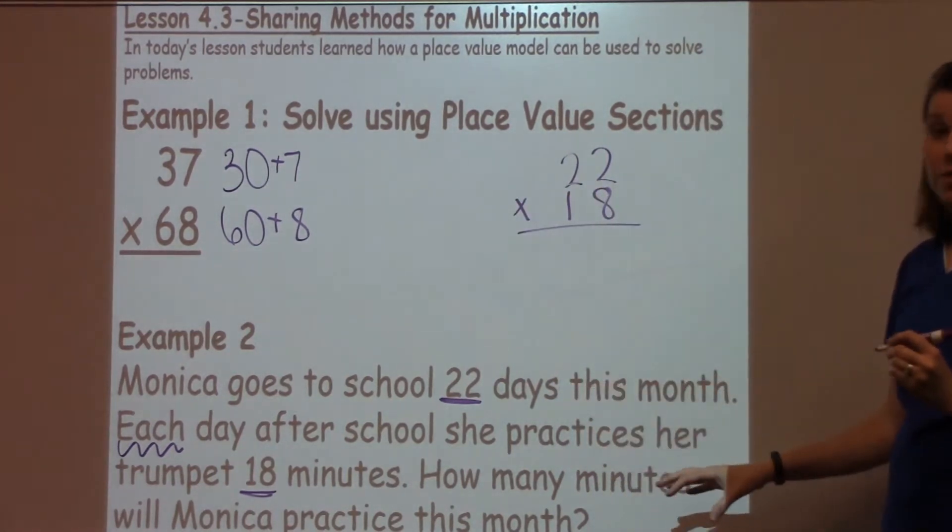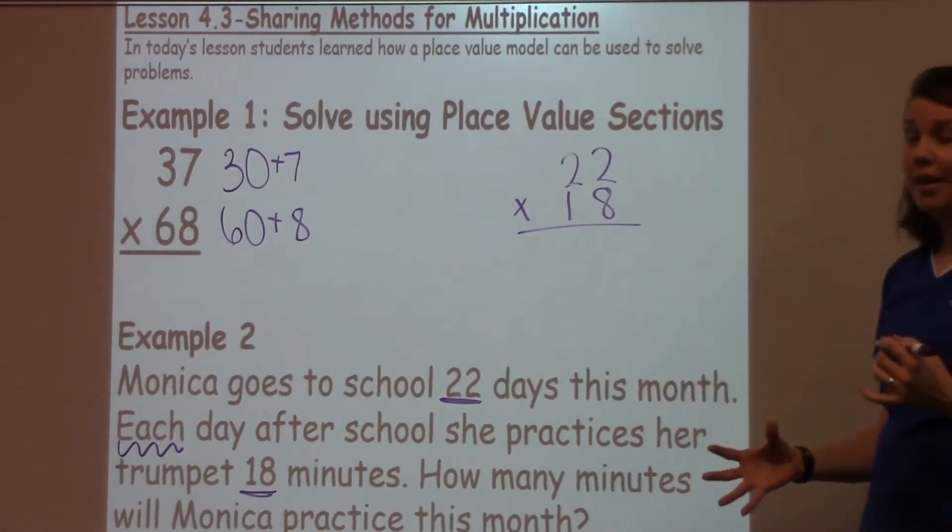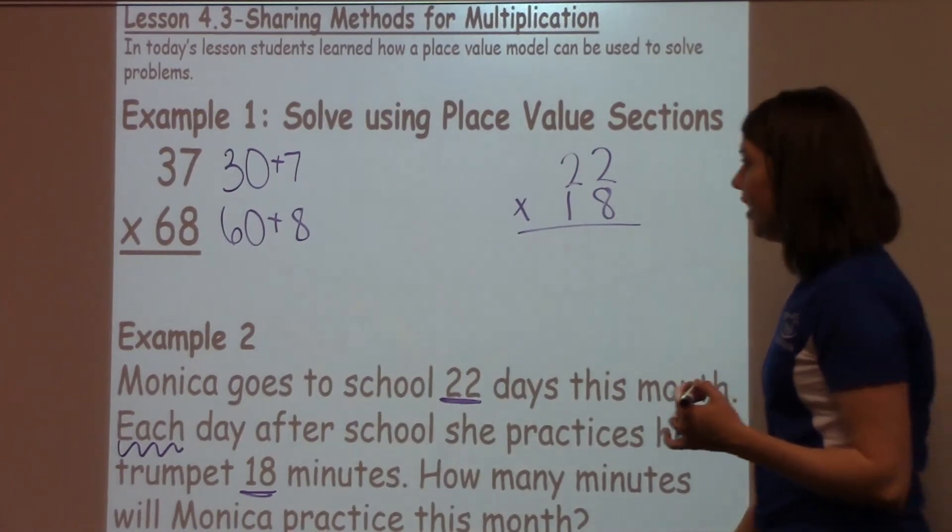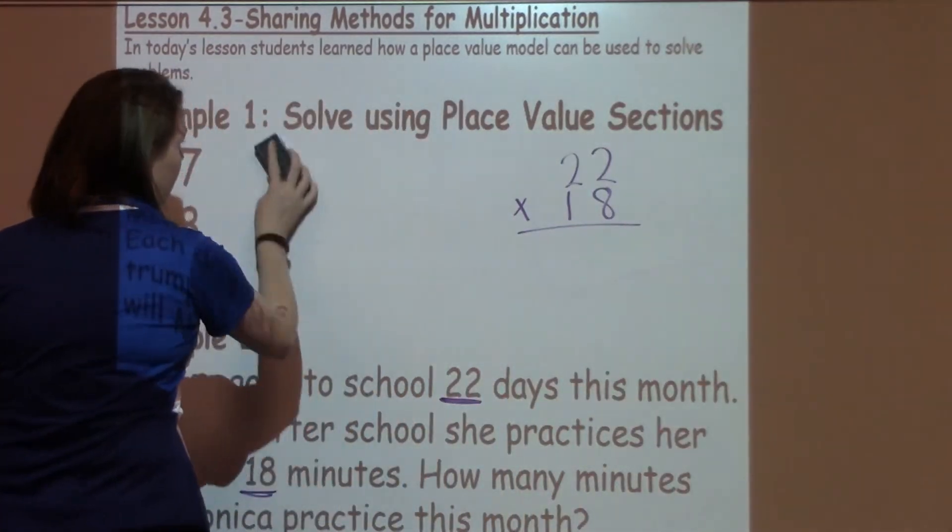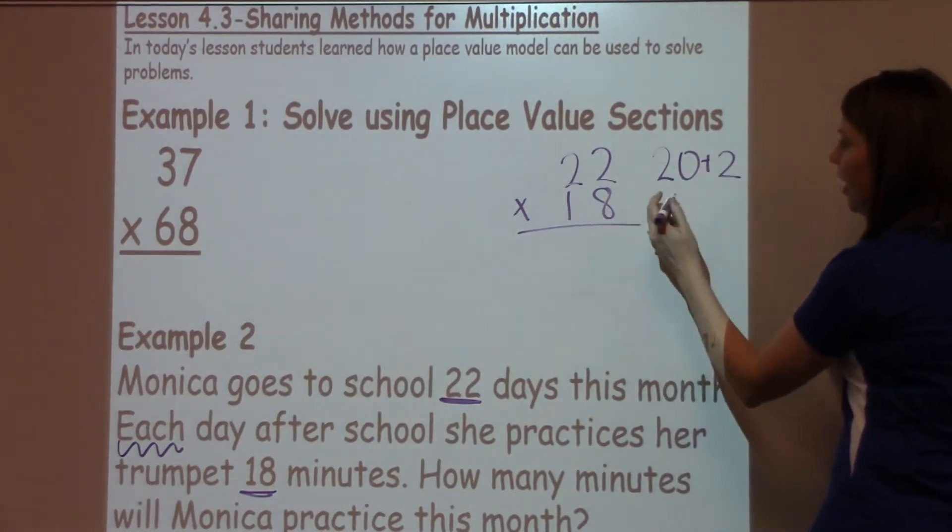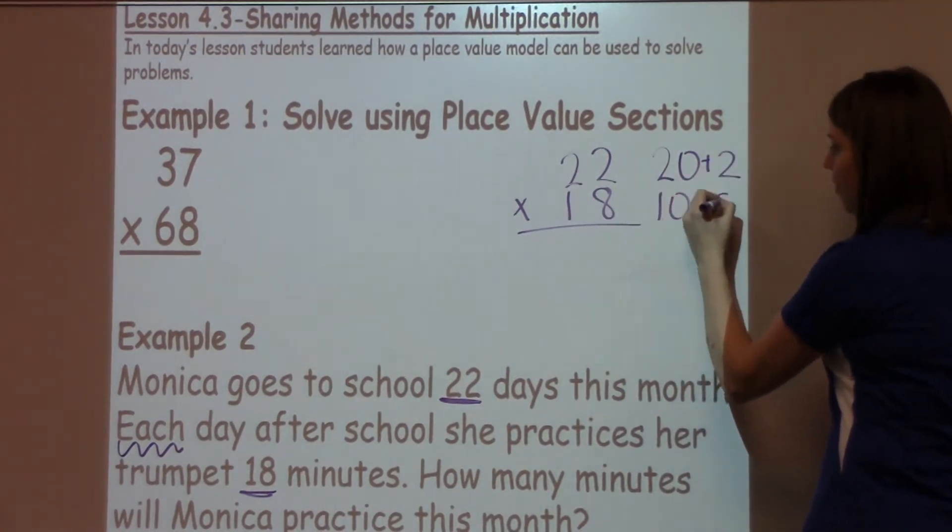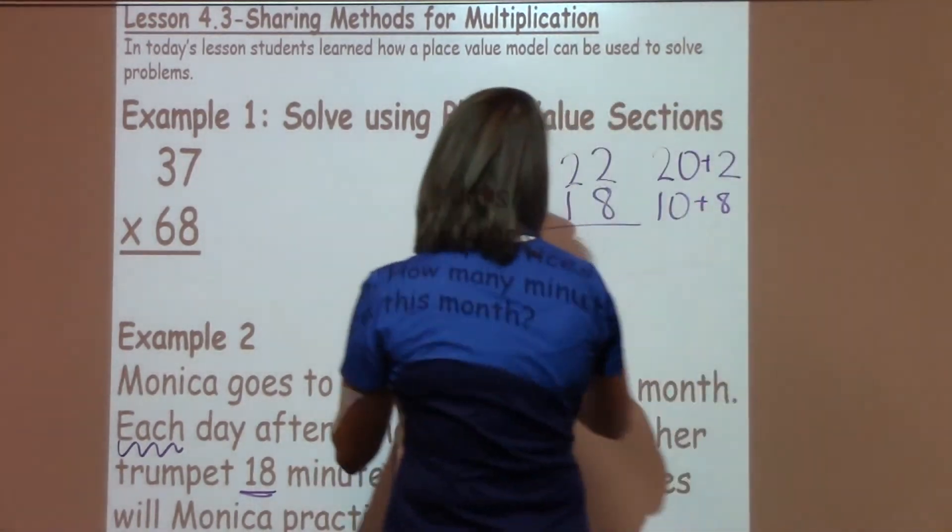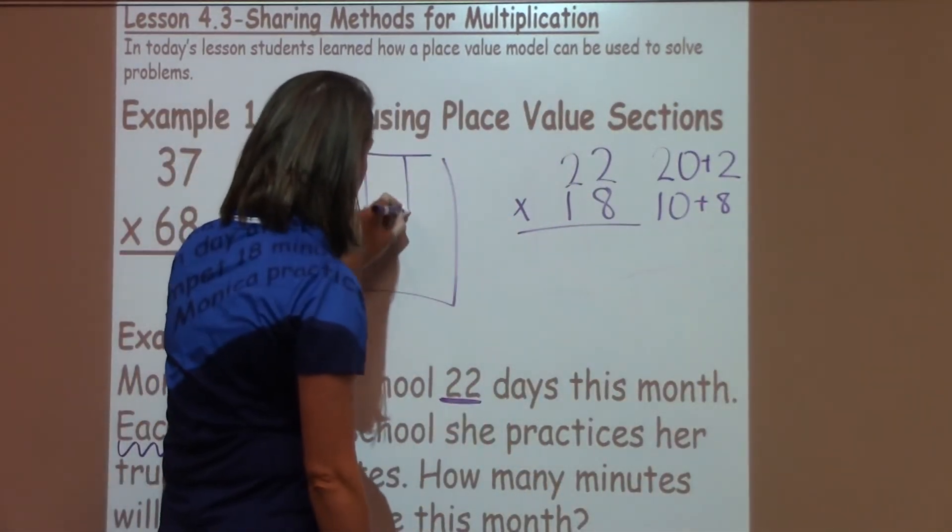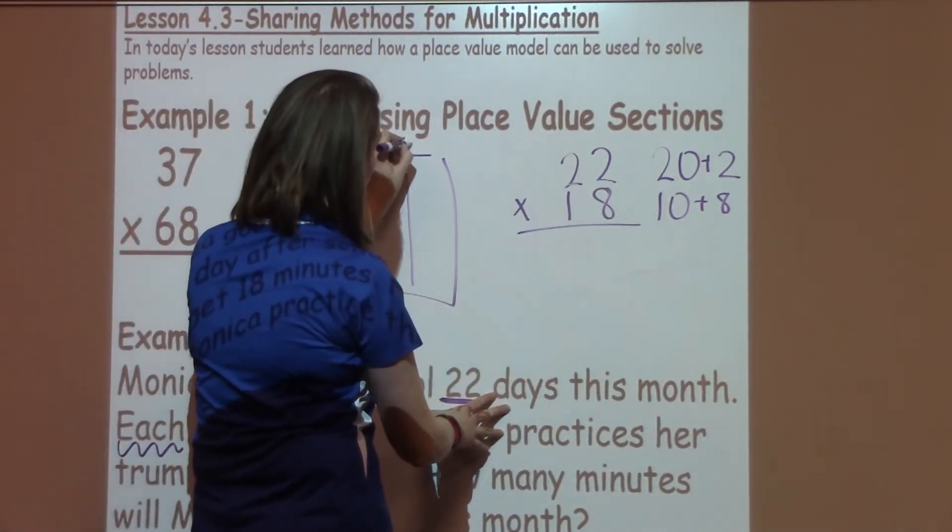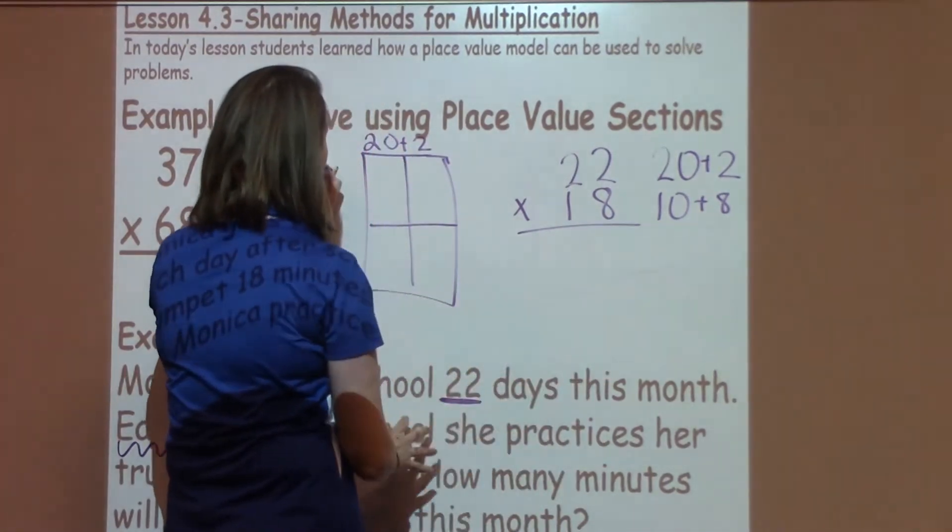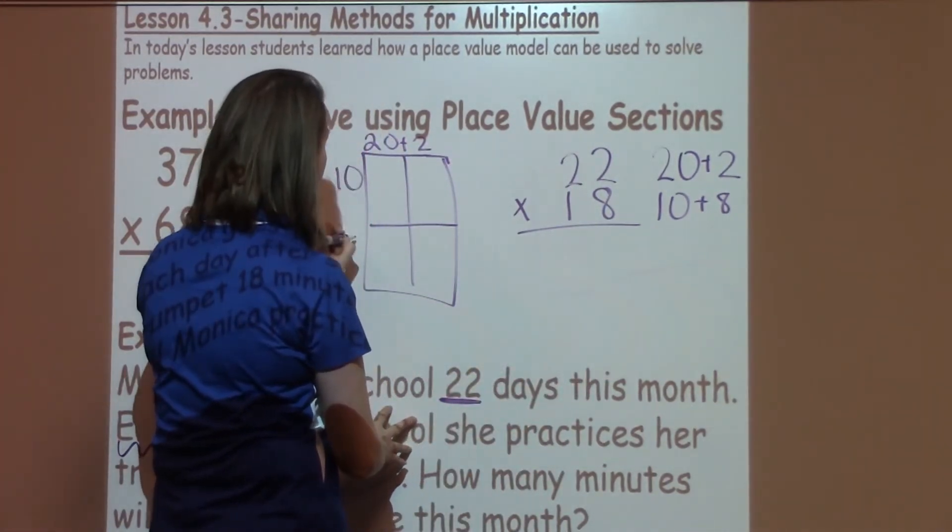Now, you can do some traditionally or place value sections. I'm going to go ahead and model place value sections again just so students can get more familiar with seeing this example again. So I'm going to break these numbers apart which is just taking 20 plus 2 and then I've got 10 plus 8. I'm going to apply this over here by using my box and divide it in half and I've got my 20 plus my 2 divide my box again. And then I've got my 10 and my 8.